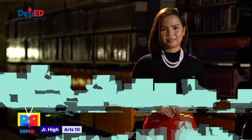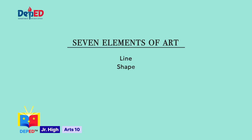Speaking of elements, that is the next topic we are going to talk about. The elements of art are its qualities or properties. These seven elements are line, shape, space, value, color, texture, and perspective. Let's discuss each one starting with line.